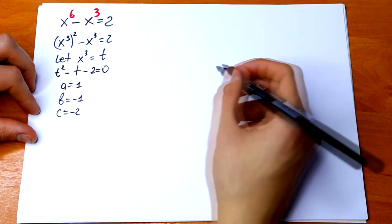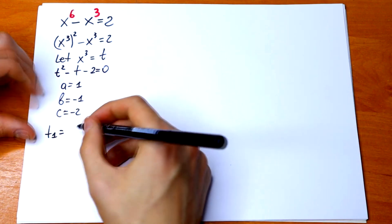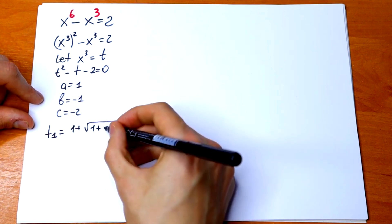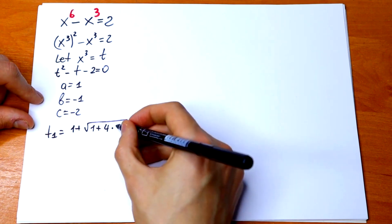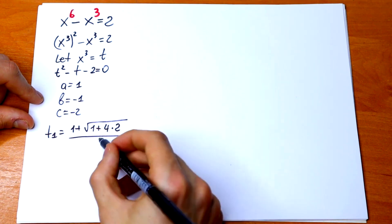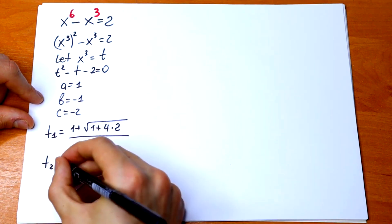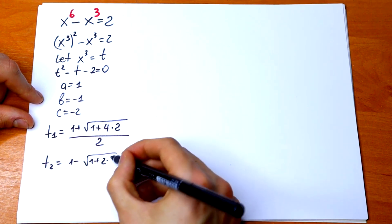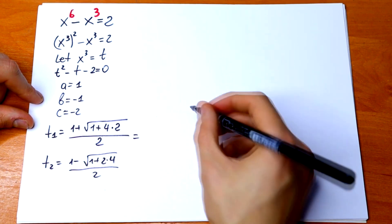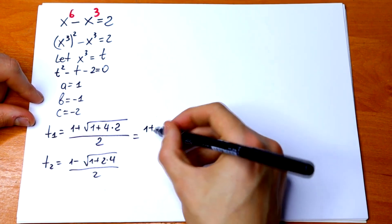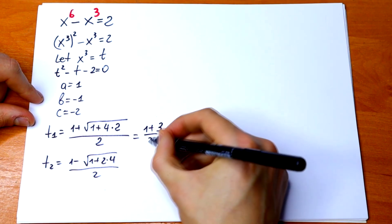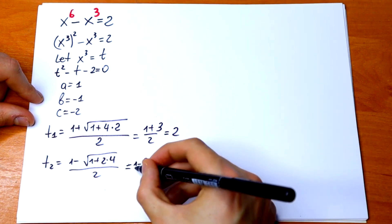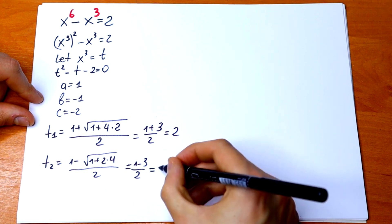So let's solve our equation. t₁ will be equal to minus b, 1 plus square root of 1 plus 2 times 4, all over 2. And the second root will be equal to 1 minus square root of 1 plus 2 times 4, all over 2. So the first root will be 1 plus square root of 9, which is 3, all over 2, equal to 2. And the second root will be equal to 1 minus 3, all over 2, equal to minus 1.